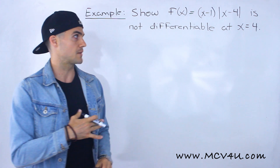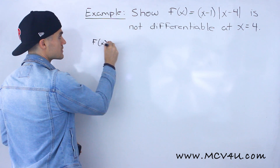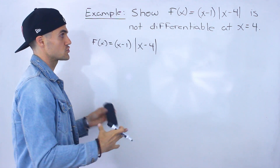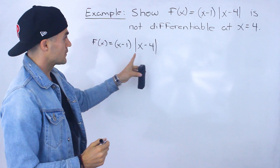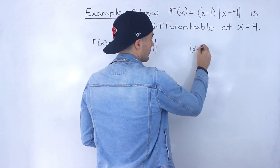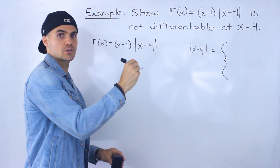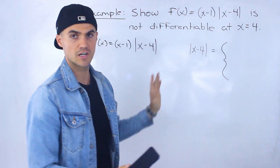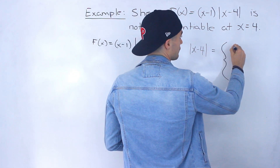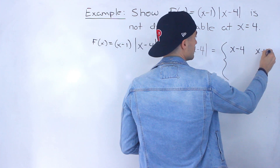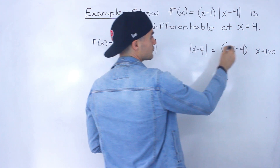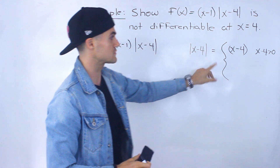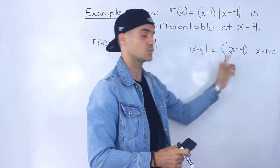Like I've been doing in the previous examples, I'm first going to take this function — x minus 1 times the absolute value of x minus 4 — and graph it so we can visually see what's going on. Notice that this function has the absolute value of x minus 4. We can always change an absolute value function to a piecewise function, and it depends on whether x minus 4 is positive or negative. If x minus 4 is greater than 0, we just leave it as x minus 4.